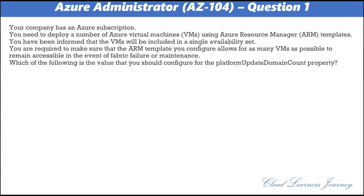Question number one. Your company has an Azure subscription. You need to deploy a number of Azure virtual machines using Azure Resource Manager templates. You have been informed that the VMs will be included in a single availability set. You are required to make sure that the ARM templates allow for as many VMs as possible to remain accessible in the event of fabric failure or maintenance. Which value should you configure for the platform update domain count property? The correct answer is B: 20.